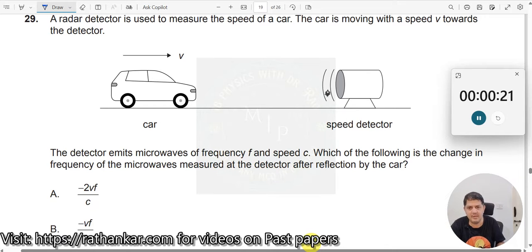Look here. You are using what kind of waves? Microwaves and speed c. This is not 330 meters per second, this is 3 times 10 to the power 8 meters per second. So this is electromagnetic waves.